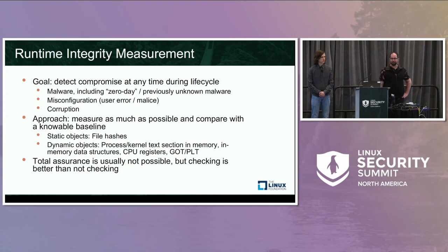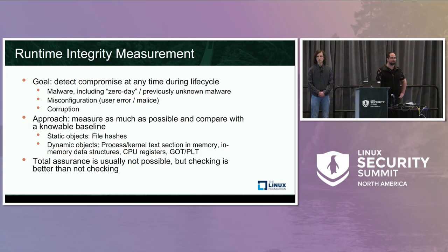The goal of runtime integrity measurement is to detect compromise at any time during a system lifecycle. That would include malware — including zero-day malware — and exploits against a piece of software. It would also include misconfiguration of a system, either deliberate or unintentional, that could cause a system to behave incorrectly. And it includes corruption, such as bit flips or other errors that could cause software to behave differently than expected. These are all of great concern when you have high-assurance systems running sensitive software.